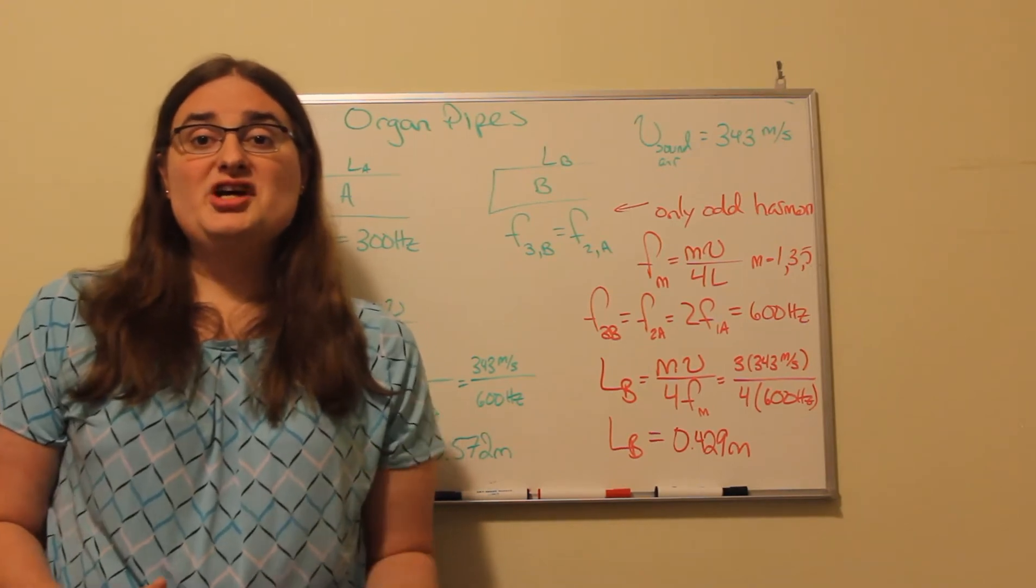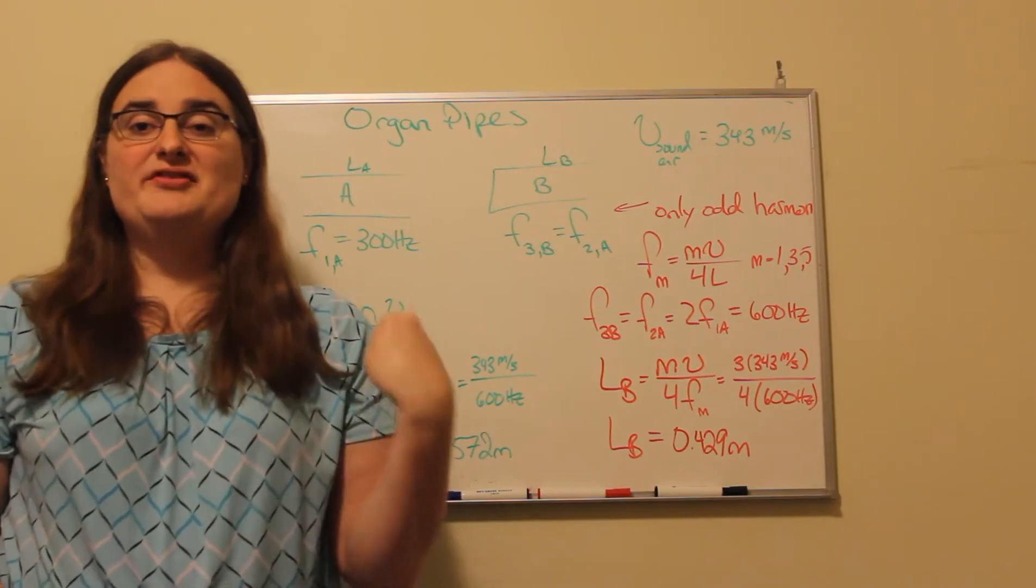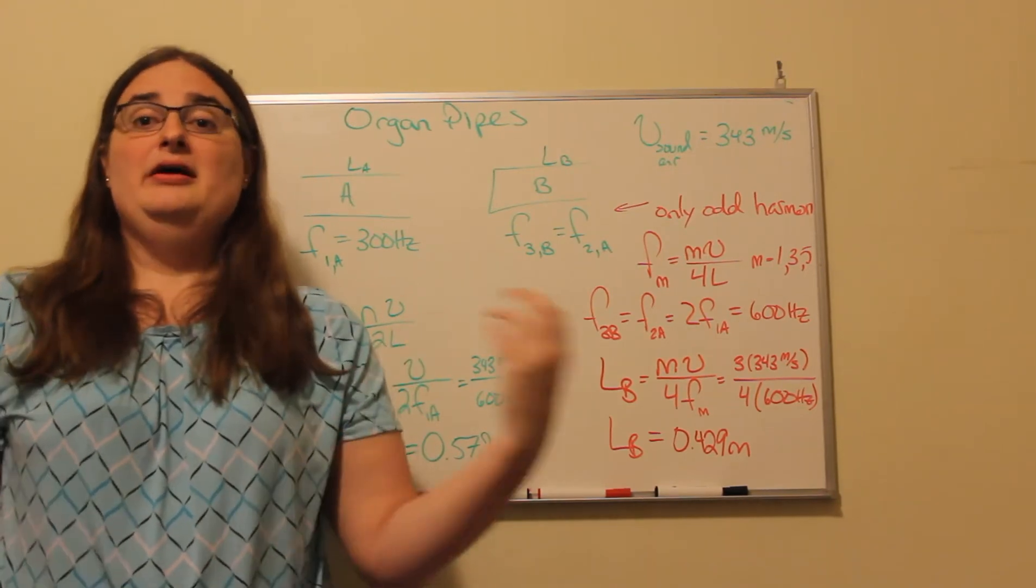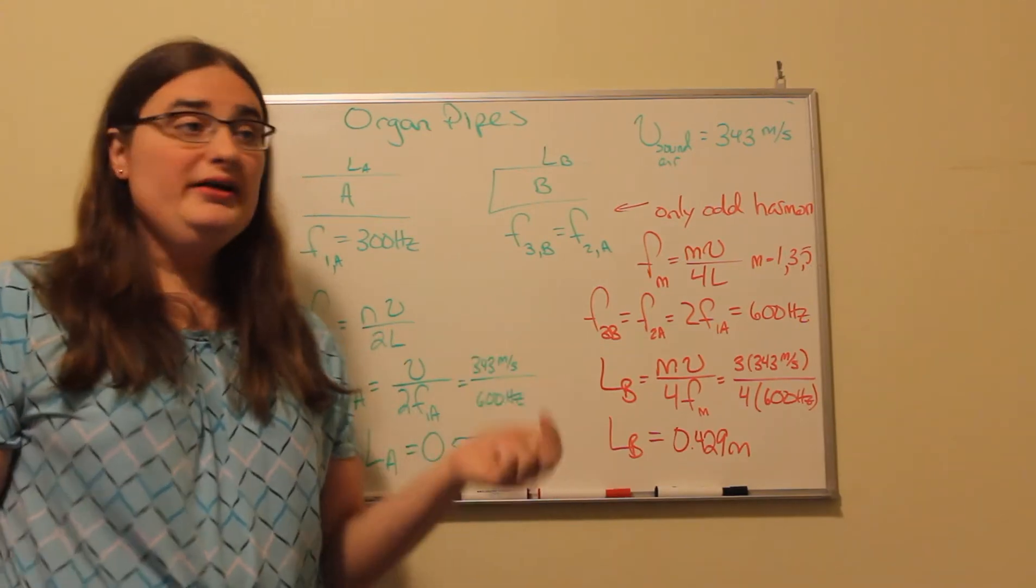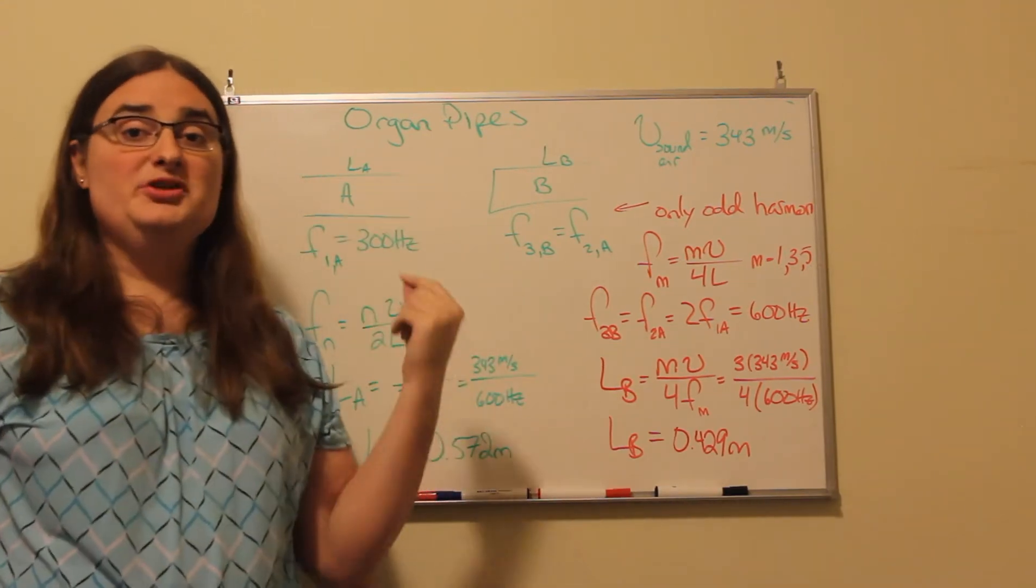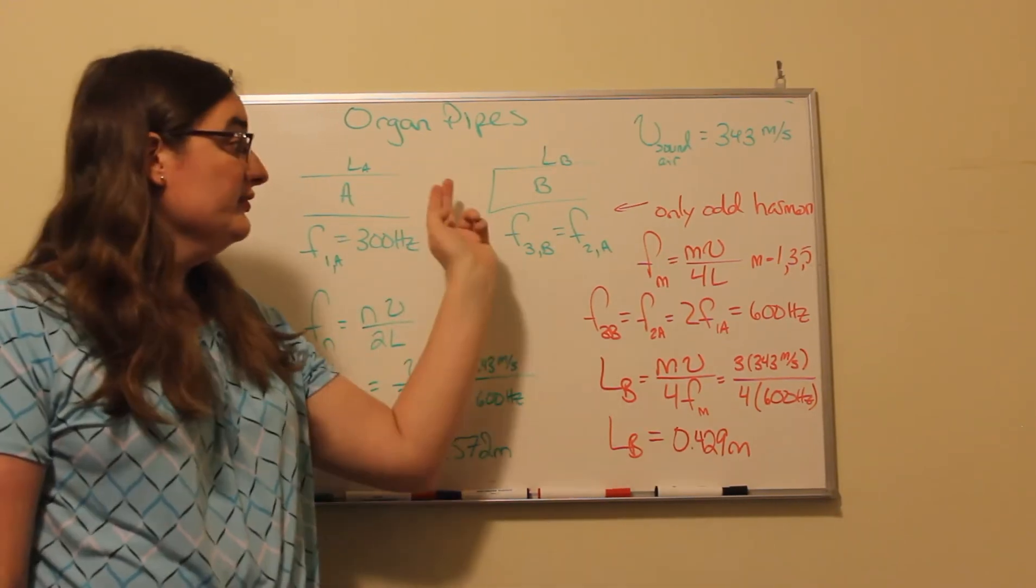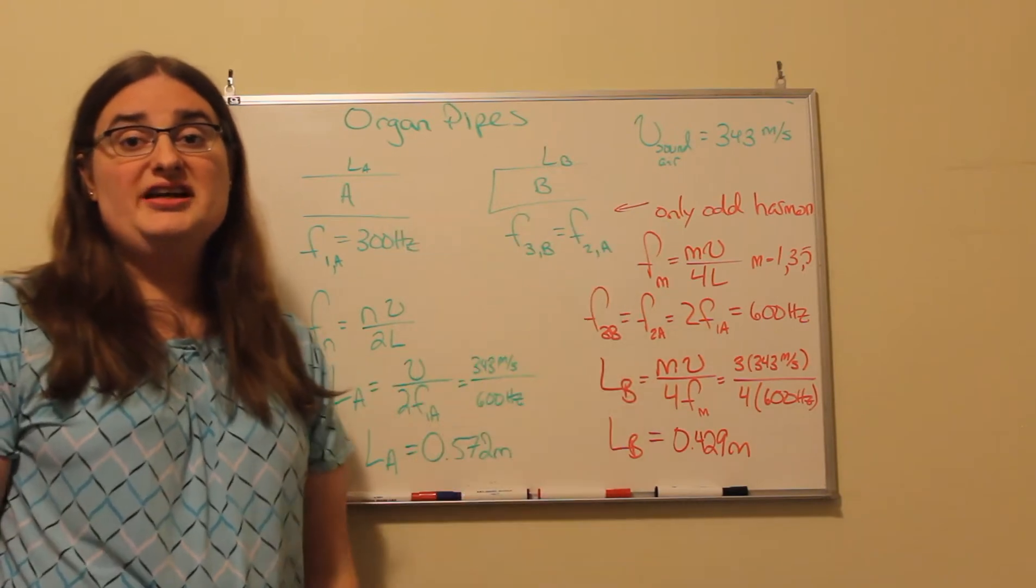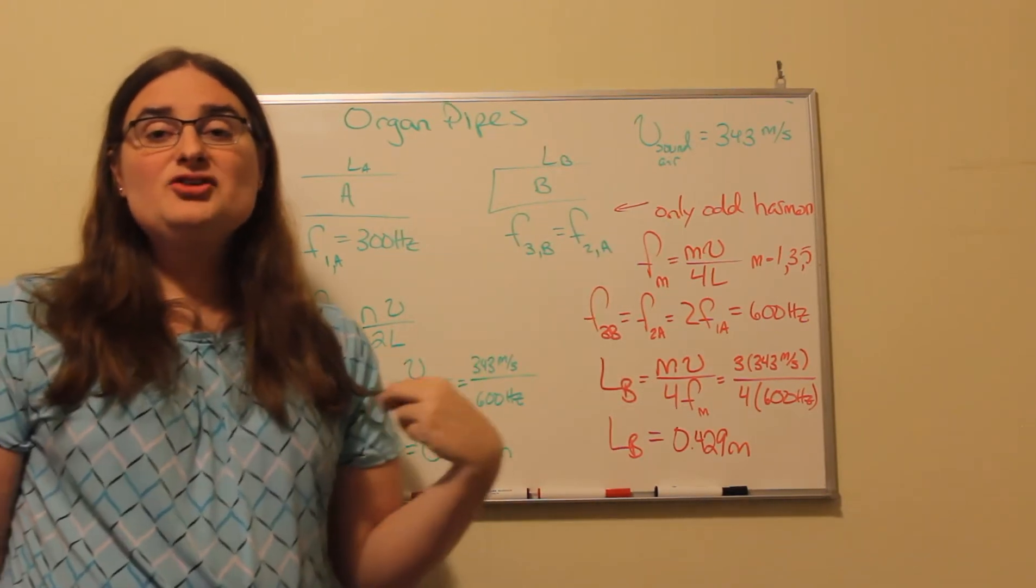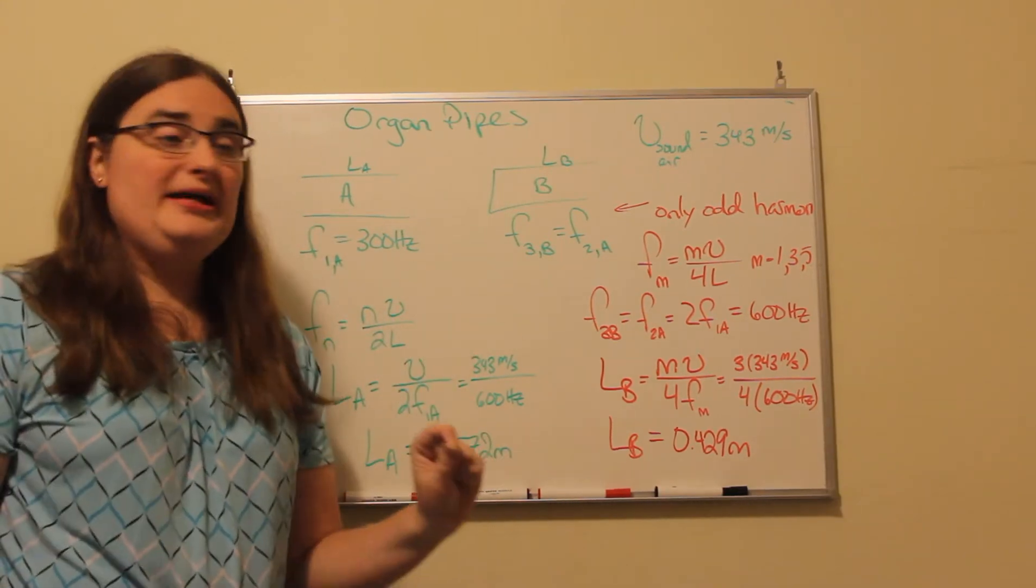So organ pipes are types of musical instruments based off standing waves of air inside pipes, and there are two different geometries we can deal with. One is an open-open pipe, which is just a pipe that has two open ends on either side. The other is an open-closed pipe, where one side is closed, the other side is open, and we end up getting two different frequency spectrums from these types of pipes.